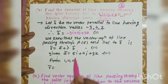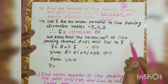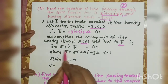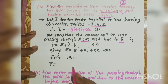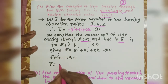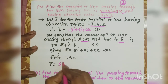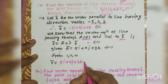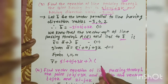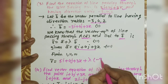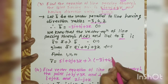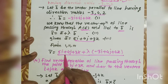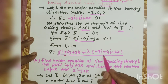We know that the vector equation of a line passing through the point and parallel to b̄ — we substitute the values: ā is given and b̄ is given. Putting the values into the equation, ā = 5i + 4j + 3k. So r̄ = (5i + 4j + 3k) + λ(−3i + 4j + 2k). This is the vector equation of a line passing through this point and having the direction ratio of the parallel line.